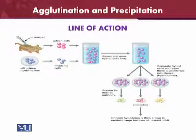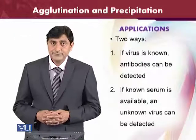There will be three kinds. First are the antibodies, then we screen for the desired antibody among the hybridomas, and then the chosen hybridoma is grown to produce large batches of the desired monoclonal antibody. So, applications: